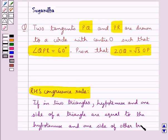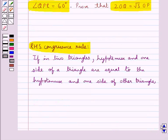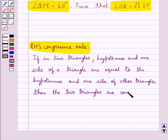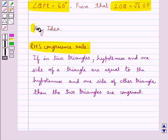of other triangle, then the two triangles are congruent. This is the key idea that we use in this question. Now let's see the solution.